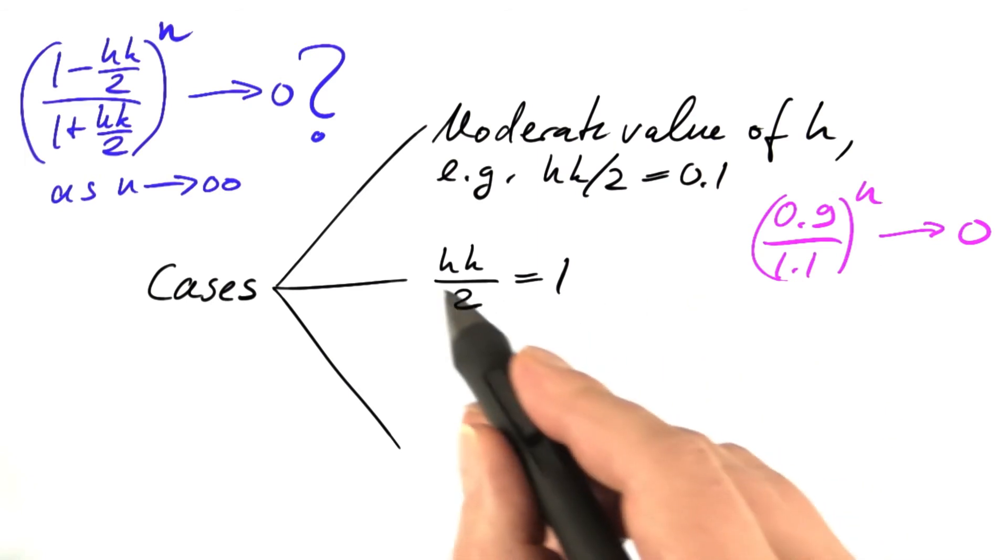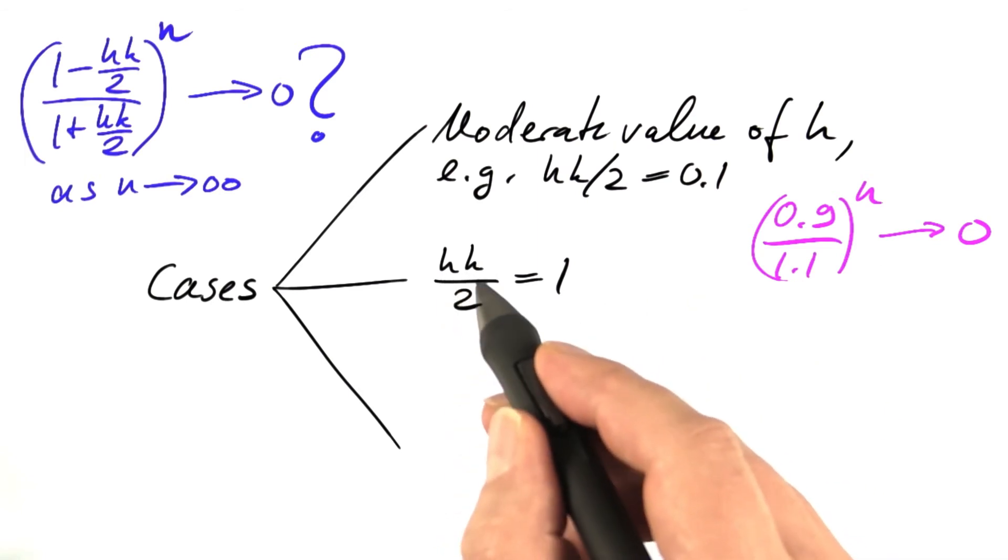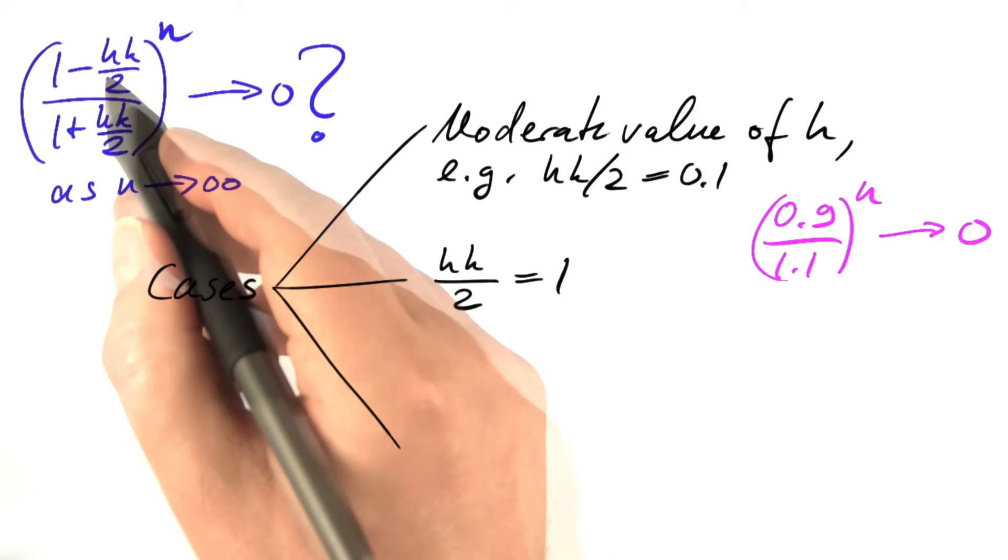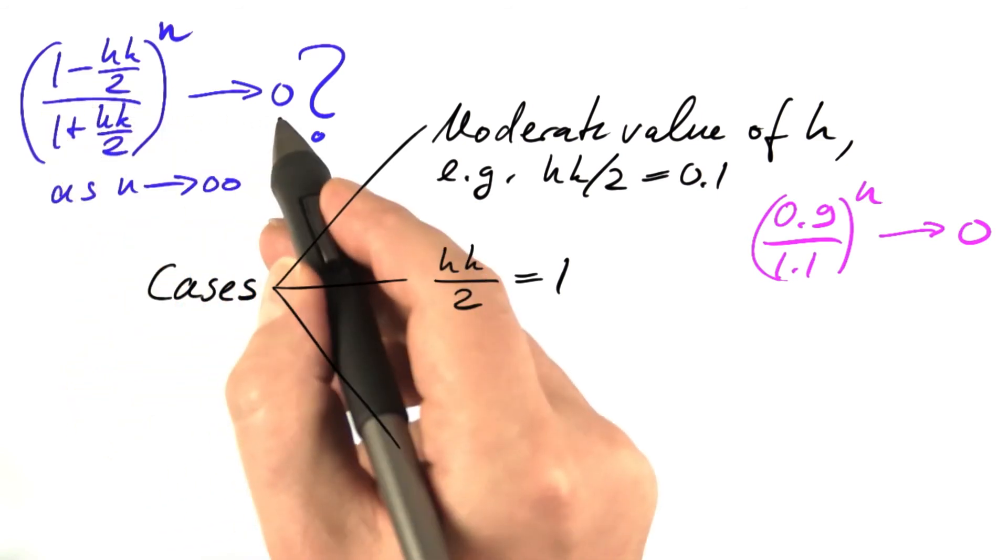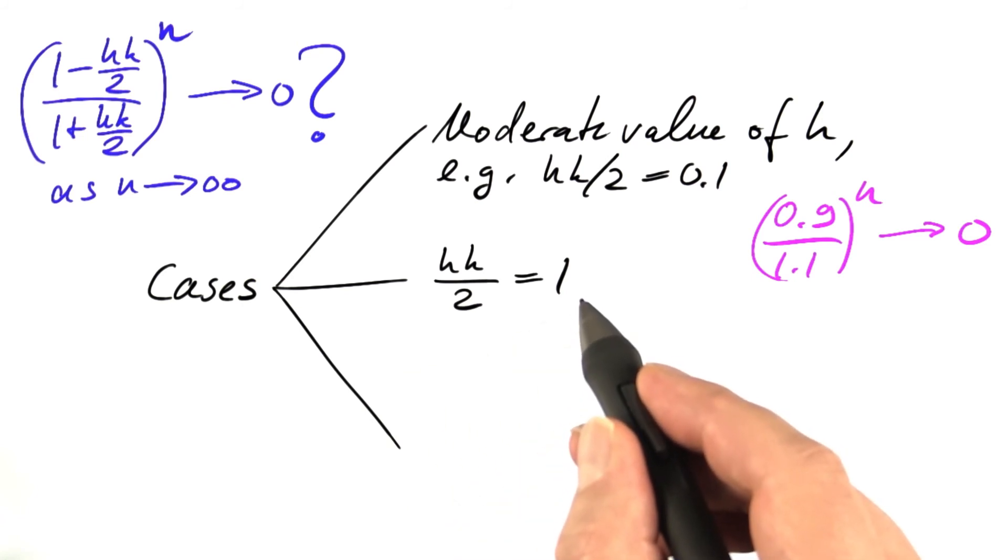So in this case, we have stability. If hk over 2 happens to be equal to 1, we get a fraction with a 0 in the numerator. That's always 0. No problem with that. So we have stability in that case.